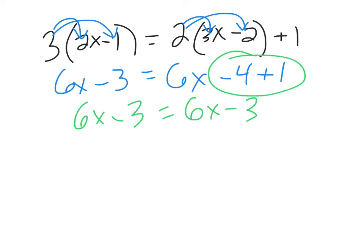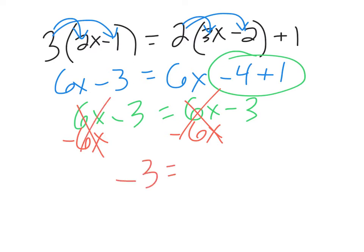They're the same on both sides. Even if I continue and subtract 6x from both sides, I'm left with negative 3 equals negative 3, which gives 0 equals 0. When you get 0 equals 0, this is called an identity. The way I think about it is that the same number is on either side — like looking into a mirror. The same thing is on each side of the equal sign.